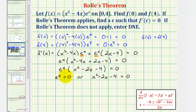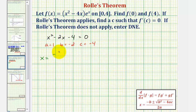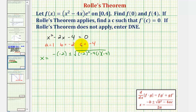Well e to the x never equals zero, so that equation has no solutions. So we need to solve the quadratic x squared minus two x minus four equals zero, which is not factorable, so we'll apply the quadratic formula, where a equals one, b equals negative two, and c equals negative four.